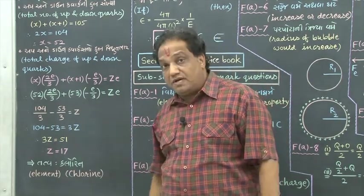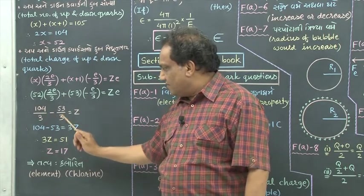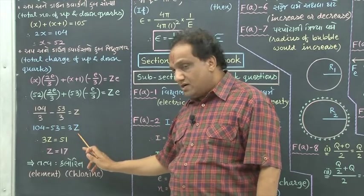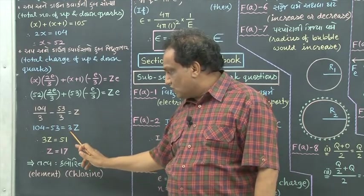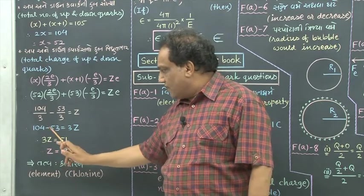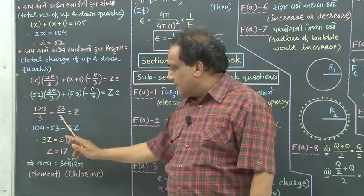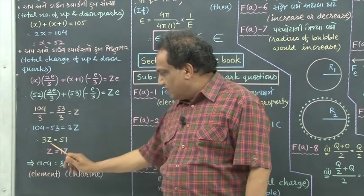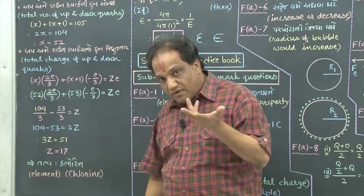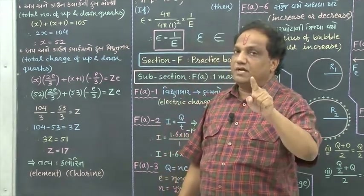Now just multiply each term by 3: then here it is 104 minus 53, and when you multiply by 3 on the right it will be 3Z. And 104 minus 53 is 51. So 3Z equals 51, then what is Z? It is 51 upon 3, that is 17.